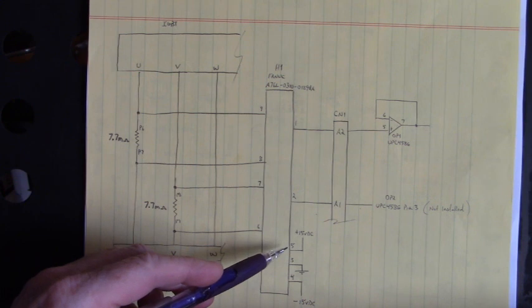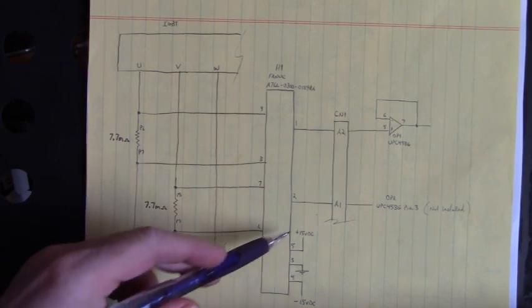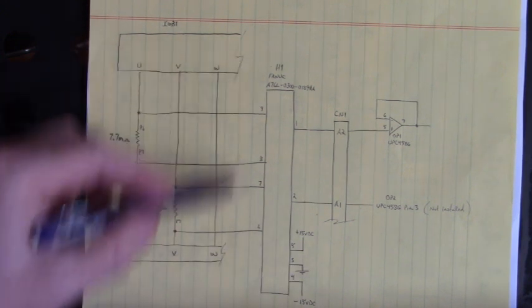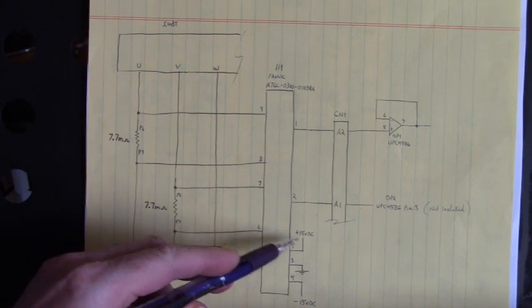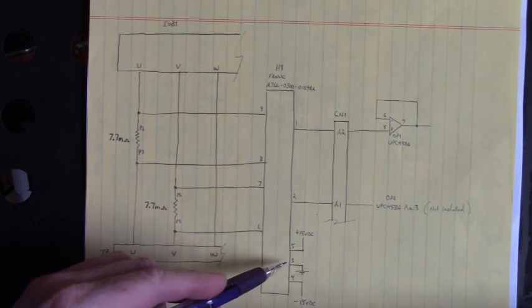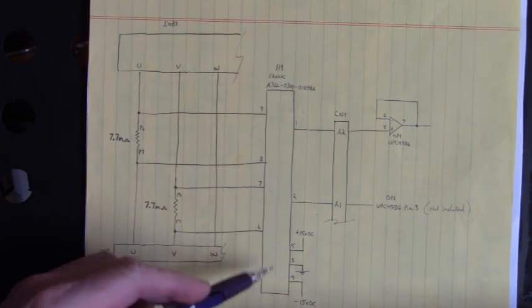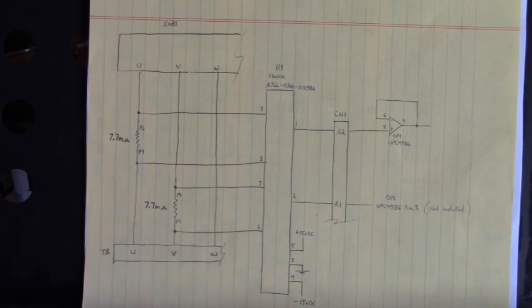On pin 5, terminal 5, 3 and 4 are the supply inputs to power up this module. Pin 5 is plus 15 volts DC in. Pin 3 is ground. And pin 4 is minus 15 volts DC. Let's go look at the hookups to perform the test.